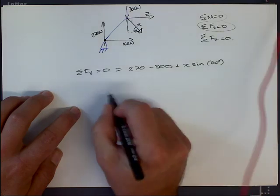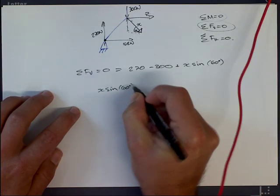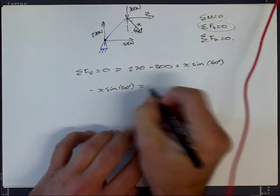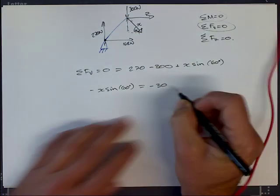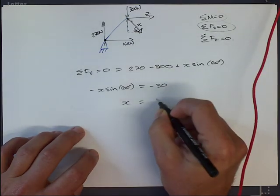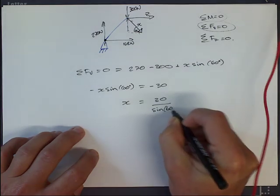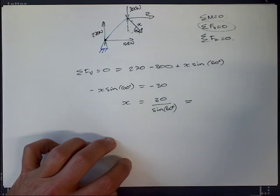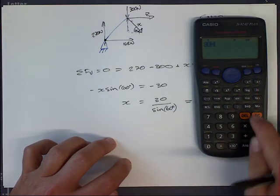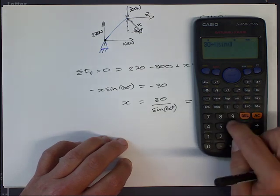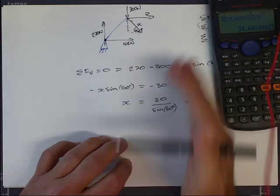So x equals 30 divided by sine of 60 degrees. If you punch that into your calculator, 30 divided by sine of 60 equals 34.64.